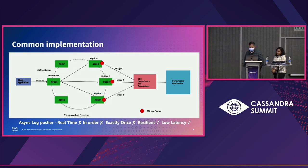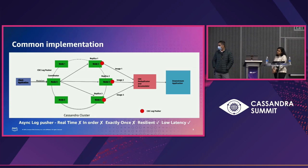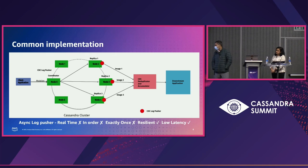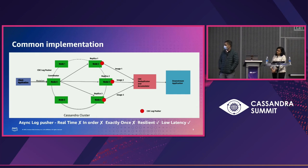What are the advantages of the current commonly used scheme? Is it real-time? No — the async pusher runs in the background, so there will be a delay. In-order? No — because data is coming from three sources, you need to do some kind of merge. Exactly-once? Absolutely not. Resilient? Yes — you have three copies of the data, so you're not going to lose data. Does it affect latency for normal transactions? Actually, no — that's the good part of this implementation. Everything is done asynchronously, so there is no impact on cluster performance.